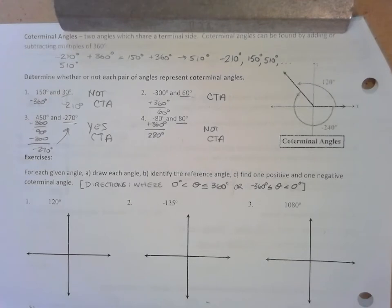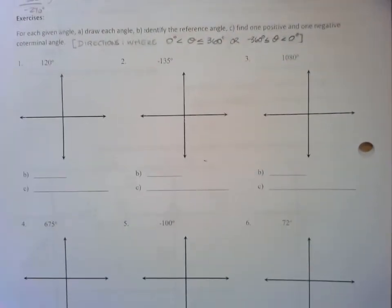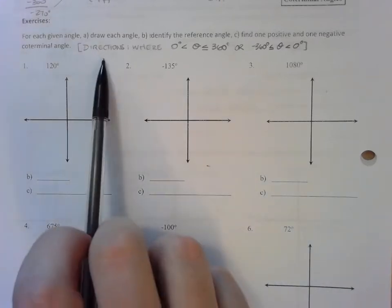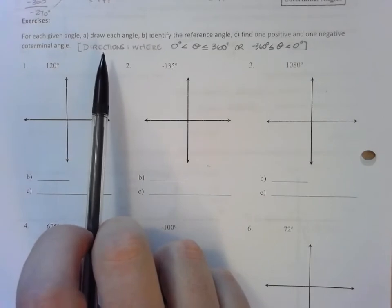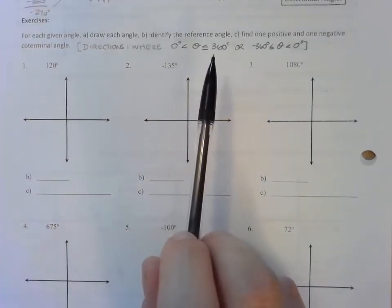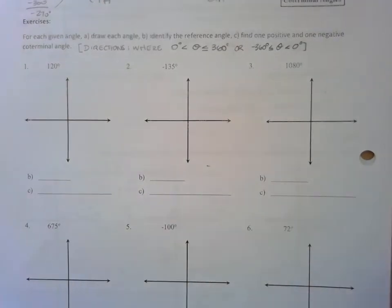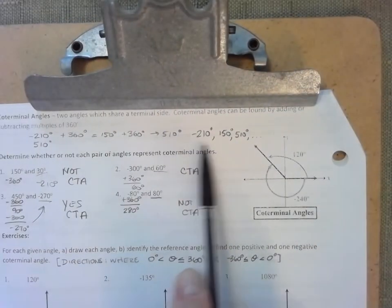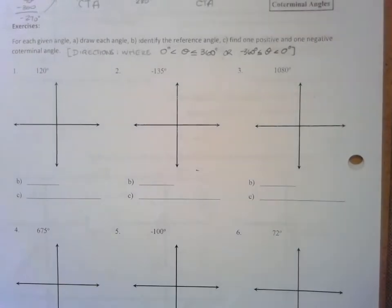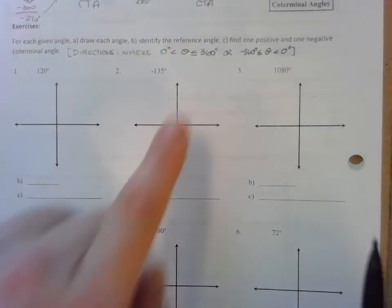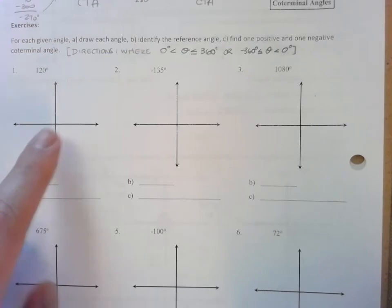In our next section, we're going to be given an angle with lots of directions: draw it, identify its reference angle, and find one positive and one negative coterminal angle. In the homework on Delta Math, they might want your positive angle between 0 and 360 and your negative angle between negative 360 and 0. Since there are an infinite number of coterminal angles, the directions may restrict our answers to be between 0 and 360 degrees or between negative 360 and 0.